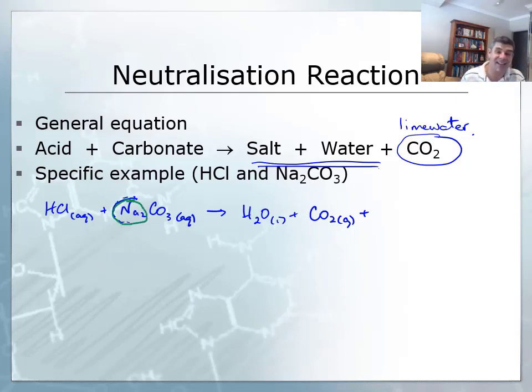There's the cation that's coming from the base or the carbonate in this case, and the anion, which is coming from the acid, the chlorine in this case. So as with our previous one, NaCl is our salt. This equation isn't balanced, so we just need to make sure that it is, and we put a 2 there and a 2 there, and we'll be good.